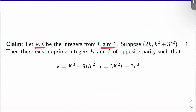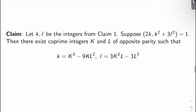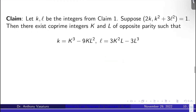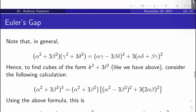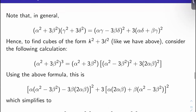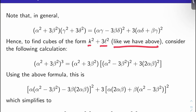Claim 3: Let K and L be the integers from Claim 1, and suppose the GCD of 2K and K squared plus 3L squared is 1. Then there exist co-prime integers big K and big L of opposite parity such that little k equals big K cubed minus 9 big K big L squared, and little L equals 3 big K squared big L minus 3 big L cubed. Before proving this, I should mention Euler's gap. Note that in general, (alpha squared plus 3 beta squared)(gamma squared plus 3 delta squared) equals (alpha gamma minus 3 beta delta) squared plus 3 times (alpha delta plus beta gamma) squared.